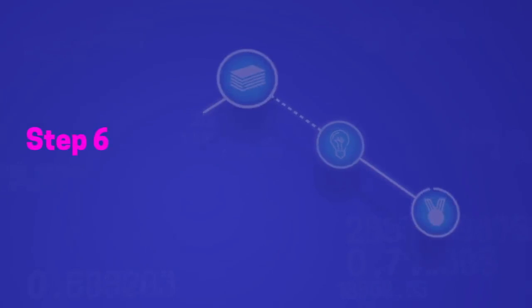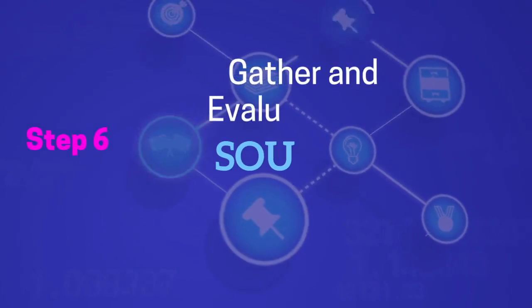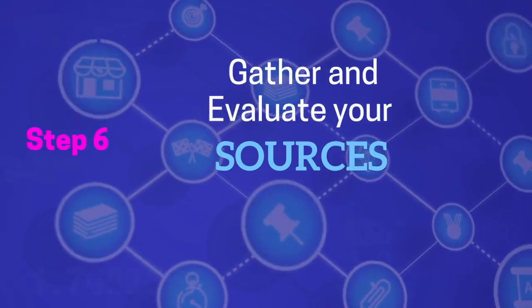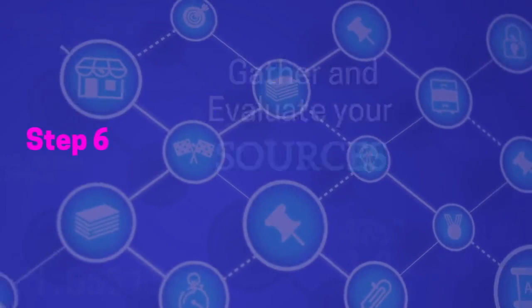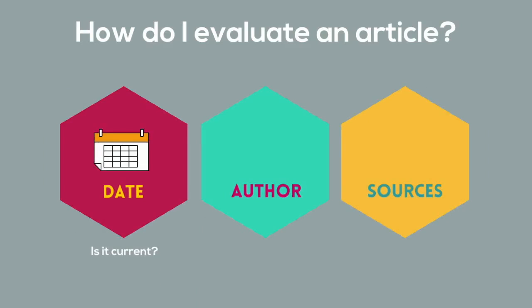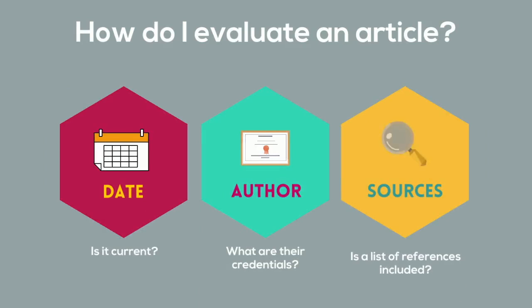Step six is to begin gathering and evaluating your sources. How can you evaluate your articles? Here are a few things to look for on each article: the date — is the article current? The author — what are their credentials? And finally, the sources — does the article include a list of references?